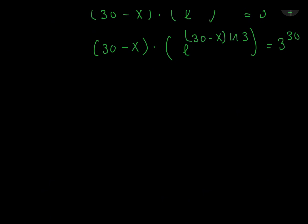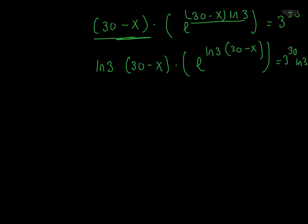From this stage, I think that if I make the exponent of e equal to this number here, I will go somewhere. In order to achieve this, we have to multiply both sides by ln 3.